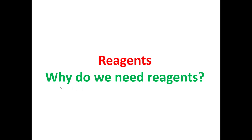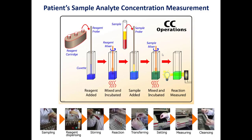Now we'll start with the talk about the reagents. The first question will be: why do we need reagents? In order to measure an analyte — any type of molecule, ion, or micromolecule — firstly we add reagents. We make an incubation at 37 degrees, and we mix the reagent to have a homogeneous concentration. Then we add the sample, which will be a serum. We make mixing of the reaction to have the final end product, which is the result of the analyte reacting with the reagent. We also make incubation at 37 degrees. Finally, we measure the absorbance of this final end product.